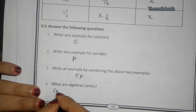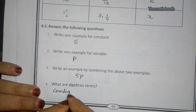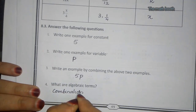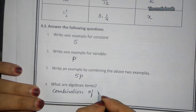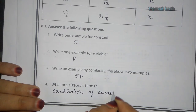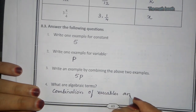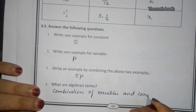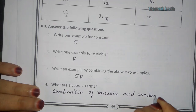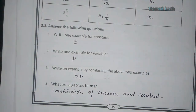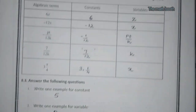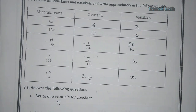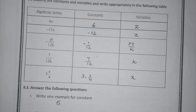The combination of variables and constants is nothing but an algebraic term. This completes Learning Sheet 29. In my next video I'm going to start Learning Sheet 30. Do like, share, and subscribe to my channel. Thank you.